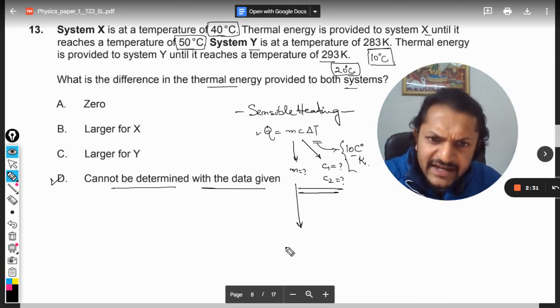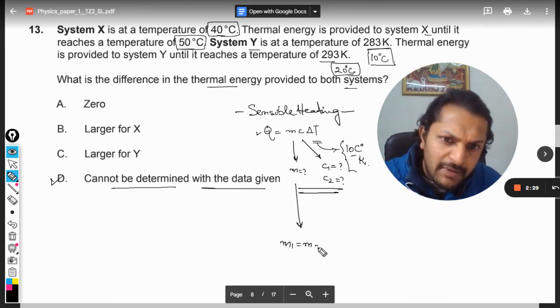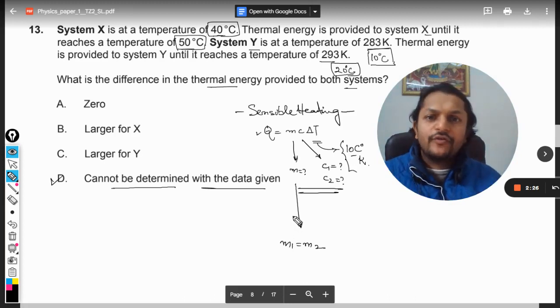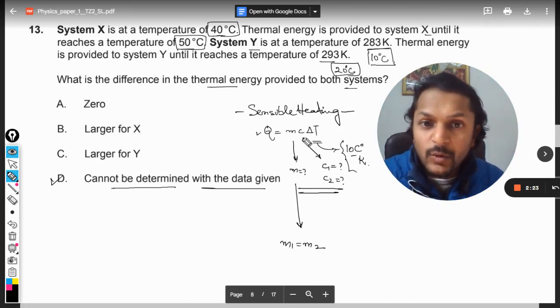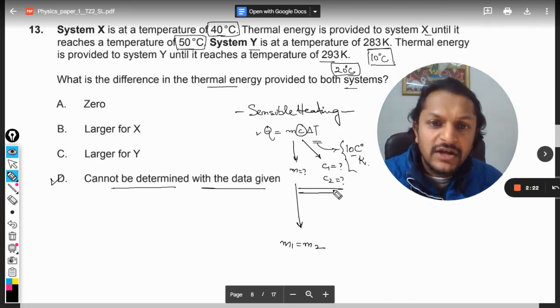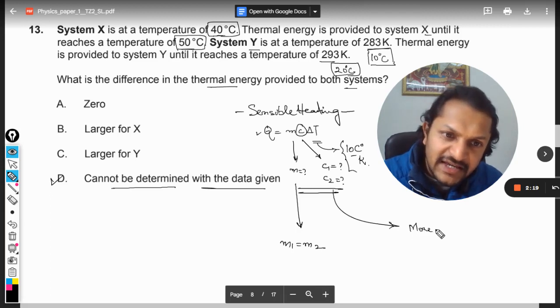Why? Because specific heat is not given. Now, more is the specific heat, it means for the same mass and for the same change in temperature, you need more thermal energy.